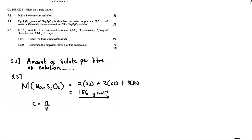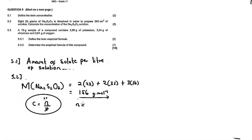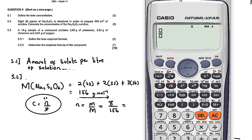The 500 cubic centimetres must be converted to cubic decimetres, because concentration is measured in moles per cubic decimetre. We also don't have the number of moles yet, so we need to calculate that. The formula for number of moles is: n equals mass over molar mass.